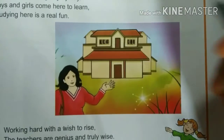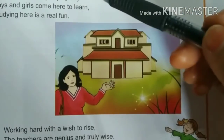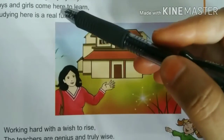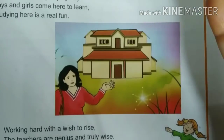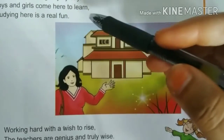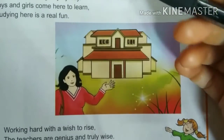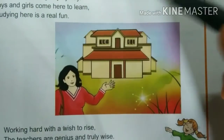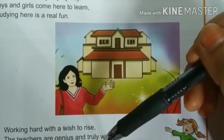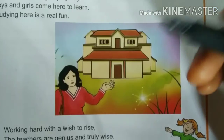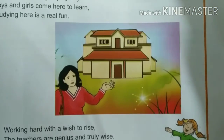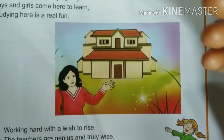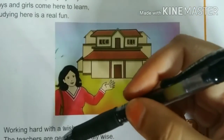So this is the poem. Now I am explaining the poem. 'Hear, hear what people say' — people are saying that our school is rising day by day, we are studying. 'Boys and girls come here to learn' — boys and girls come here to learn. 'Studying here is a real fun' — it is a real fun. 'Working hard with a wish to rise' — students do hard work, they can grow and grow. 'The teachers are genius and truly wise' — teachers are really intelligent and clever. 'We always do what teachers guide' — students follow what teachers guide them.